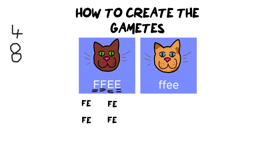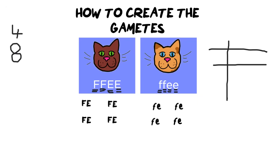That gives me the first four gametes. I'll do the same for the second cat. Once I have all eight gametes, having made sure each allele was only used twice, I put them into a Punnett square as normal. In the Punnett square, keep all gametes from the same individual in the same column or row, so we know they come from separate individuals.